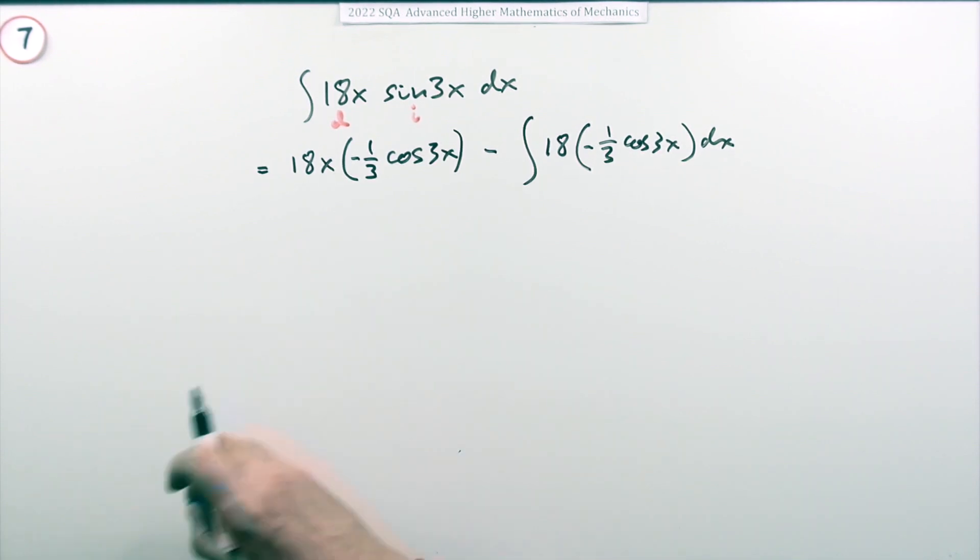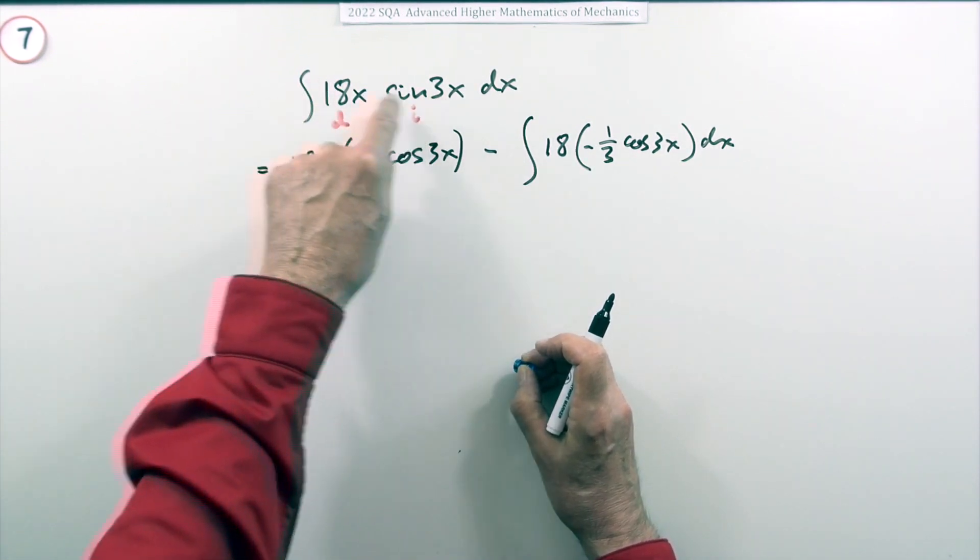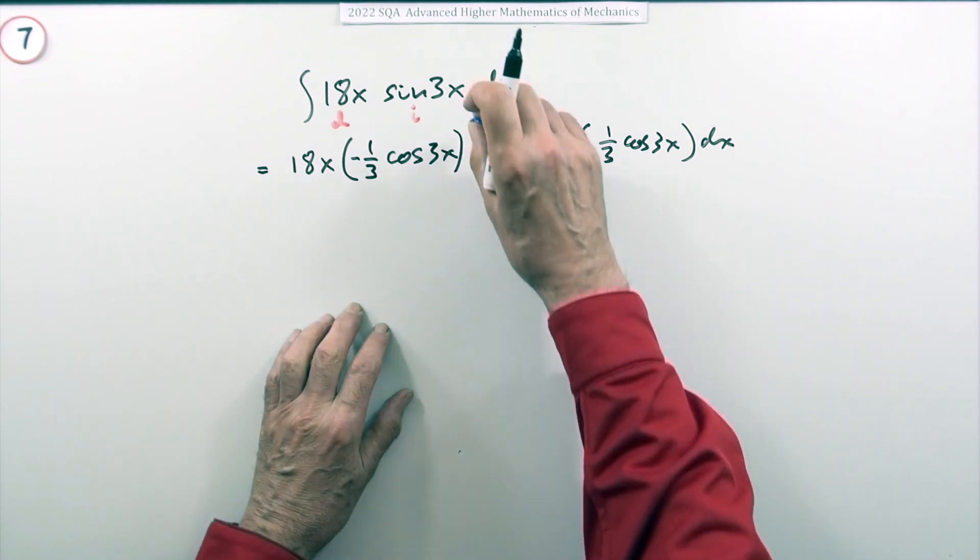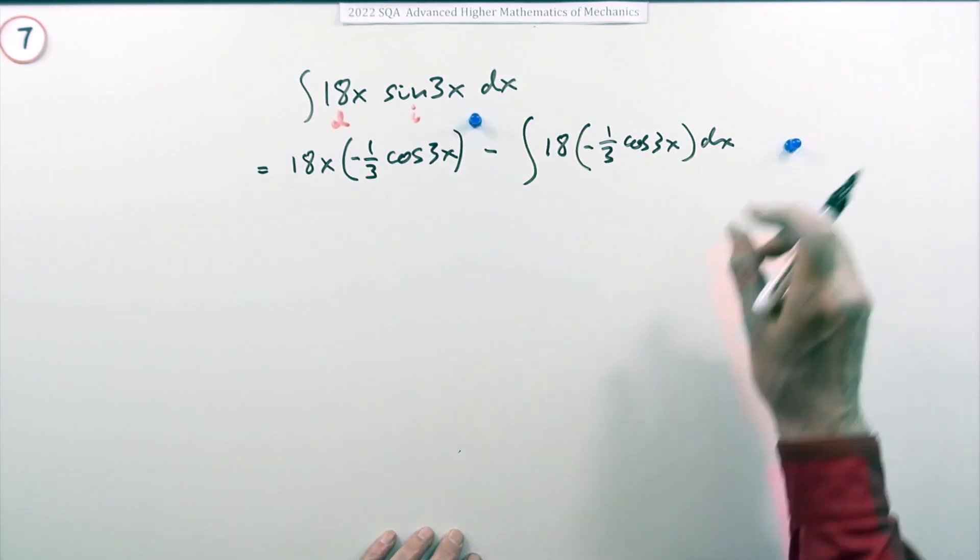Now there's two marks for this. One for making the correct decision about which one to integrate and which one to differentiate and starting it off. And then one for finishing it off.